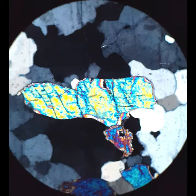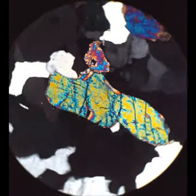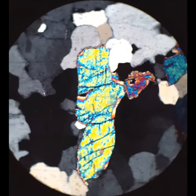When I cross the polars, you see higher-order interference colors. You'll also see it has inclined extinction, which means the grain goes black when the long axis is inclined with respect to the crosshairs.